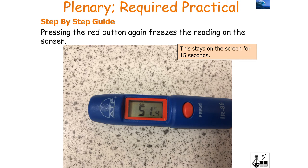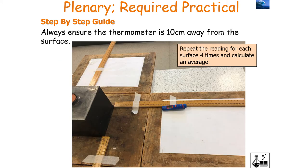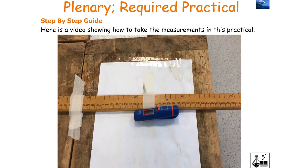Pressing the red button again can freeze the reading on the screen, and it stays there for about 15 seconds, allowing you to record your result. Always ensure the thermometer is 10 centimetres away from the surface. Carry out this infrared temperature reading for each surface of the Leslie cube, and repeat the reading for each surface four times, calculating an average value.